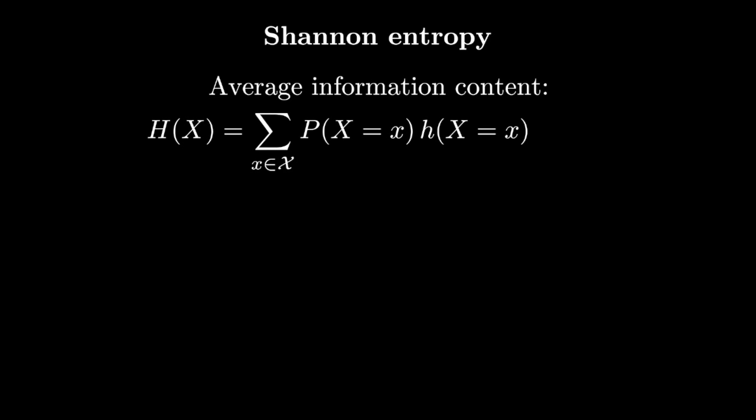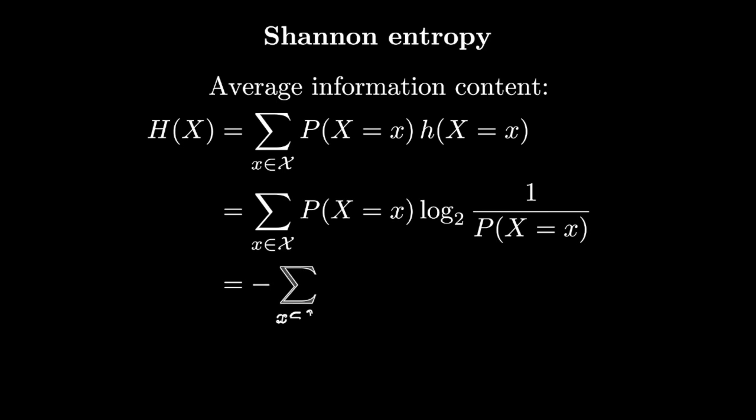But even more important than the information content associated with individual outcomes is the expected information content associated with a random variable. This quantity is called the Shannon entropy. What this quantity does is it measures how diffuse the range of outcomes is for a random variable.